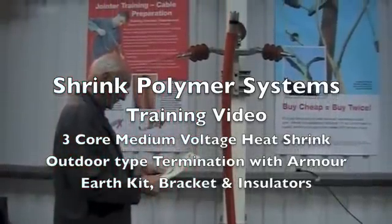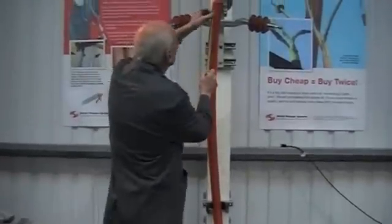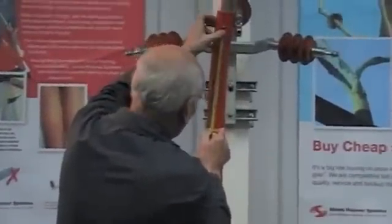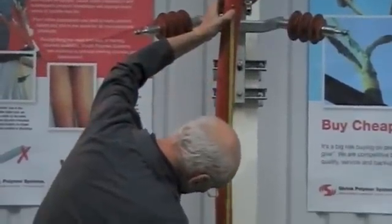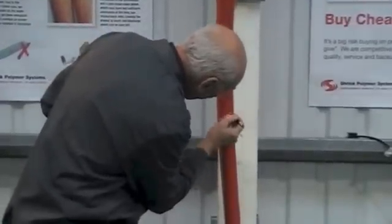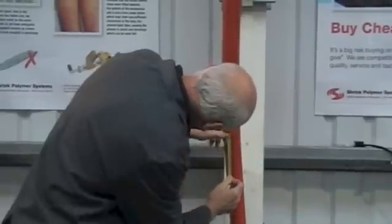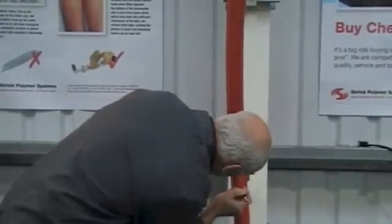We're going to show you the installation of a three core outdoor heat shrinkable termination. This could be for 12kV, 24kV or 33kV XRP cable. The only difference will be the number of rain sheds and some of the components will be longer.